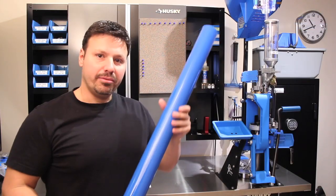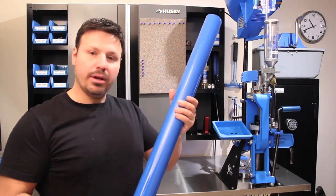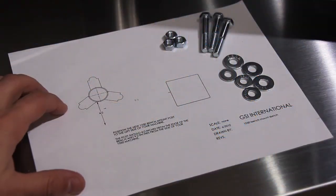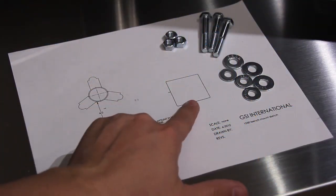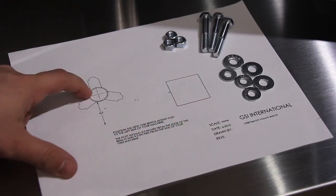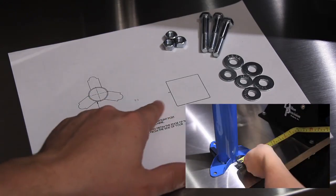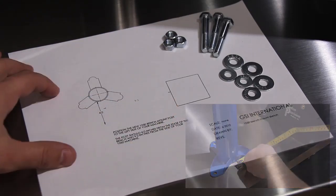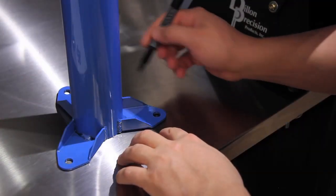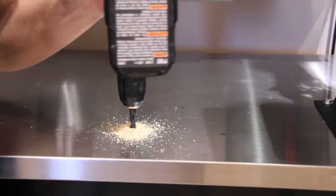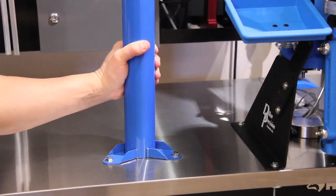First step of the installation is mounting the arm. GSI has provided a nice schematic here. This is your press, and this is where they want you to mount the arm: four inches away from the bench and nine inches away from the press. It's pretty simple. Mark your holes, drill them out, and then mount it to the table.